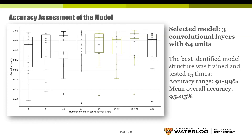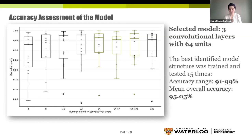Question: How did you label the pixels — based on backscatter value alone, or did you also use optical imagery or field data? Maria: It was by visual assessment. I looked at backscatter values, optical data, and incidence angle, considering what is known about the relationship between backscatter and incidence angle from previous studies, trying to consider all of those factors.